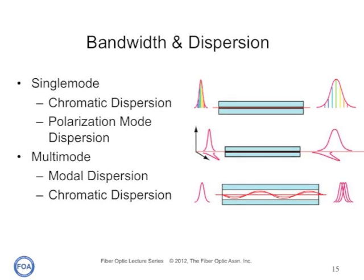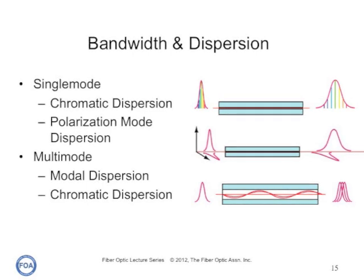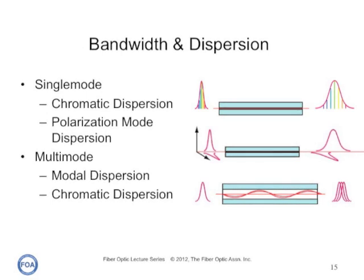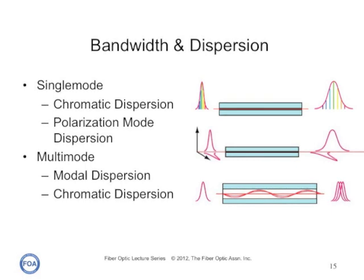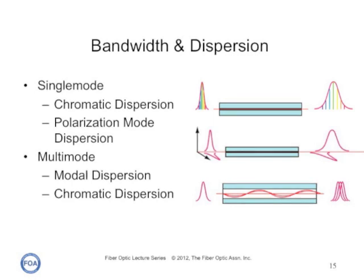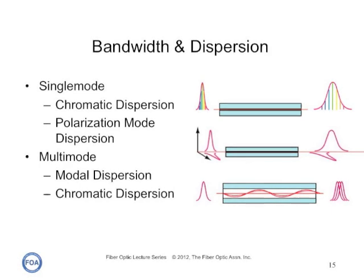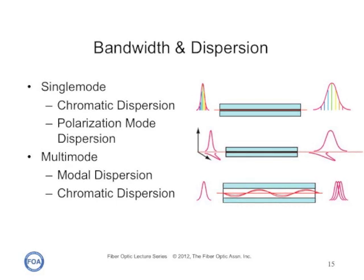High speed fiber optic data links have to worry about dispersion, especially over longer distances. For multi-mode fiber, it's typically modal dispersion caused by the different modes in the fiber, or chromatic dispersion caused by the spectral width of the source. For single mode, it's chromatic dispersion for very long lengths even with lasers, and polarization mode dispersion, where different polarized modes of light travel at different speeds in the fiber. In long single-mode links, these are typically tested to ensure proper operation.